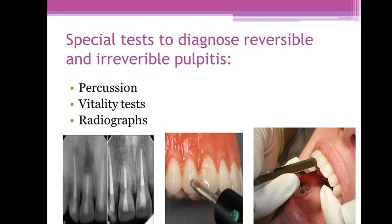In the case of reversible pulpitis, we can make a filling or a pulpotomy. For irreversible pulpitis, the treatment is either endodontic treatment or extraction of the tooth.